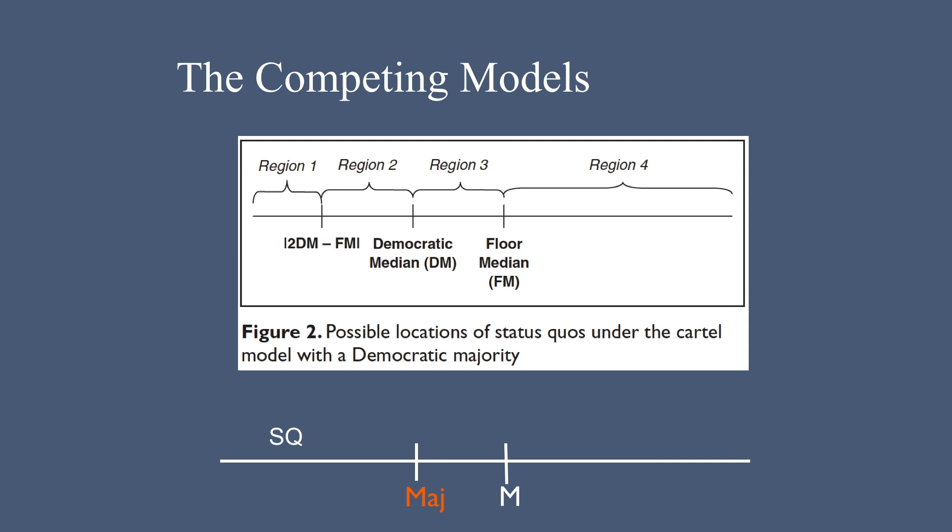This is the case where the status quo is in Region 1. Under both models, the outcome should end up at M. The majority party should not block this because more than half of the majority party prefers M to the status quo.